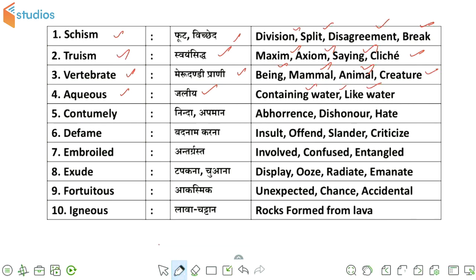Next word we have, this is contumely, जिसकी Hindi meaning होती है निंदा या अपमान. इसके synonyms हैं: abhorrence, dishonor, and hate.